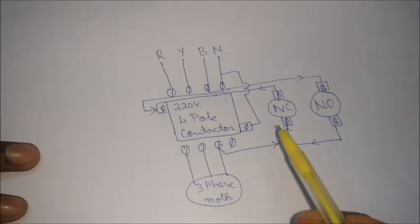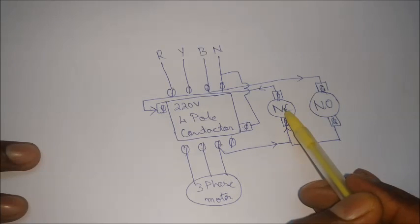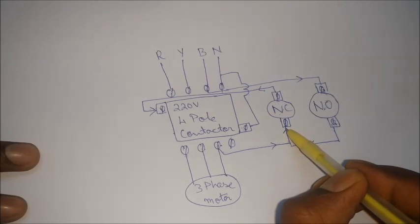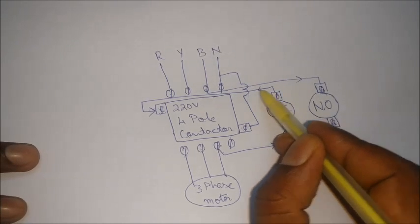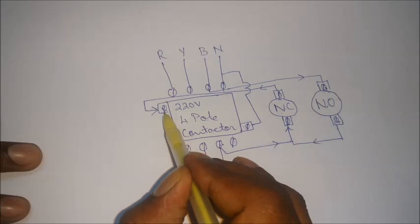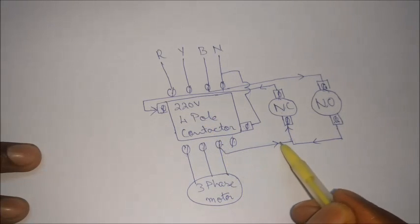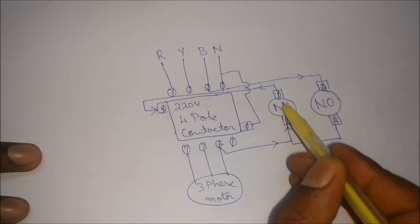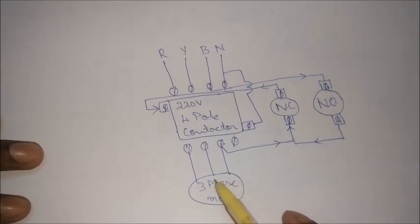Now when you decide to switch off the motor, you press the NC switch. Once you press the NC switch, current which has been coming from this will not come out of this when you press the NC switch. Hence the solenoid does not get current. The circuit breaks. So when the circuit inside this breaks, the current which was coming out of this point also breaks. So the circuit is totally broken and the motor will come to a halt.